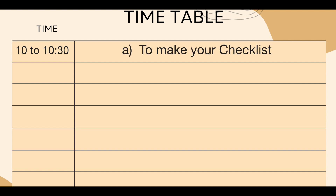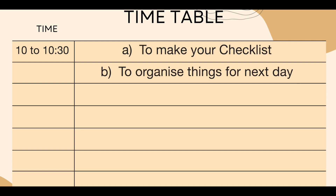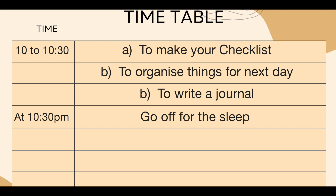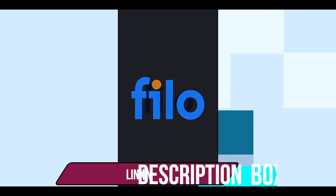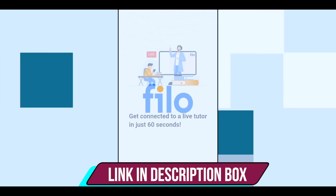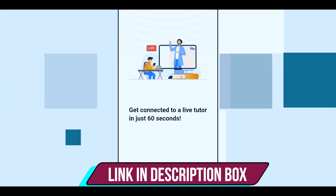From 9:30 to 10 is the time to chill or spend time with your family, and you can check your social media. From 10 to 10:30 is the time to make your checklist, organize things for the next day, write in your journal, and go off to sleep. That way, next day you can get up at 6 in the morning. I hope these hacks, challenges, and timetable help you be super productive in your coming days. Do check out the Filo app — I'll leave the link in the description box below. Take care of yourself and stay super-duper productive. Bye-bye.